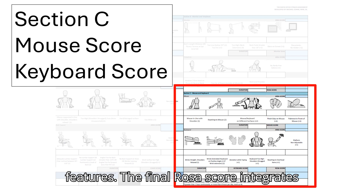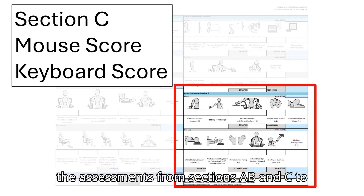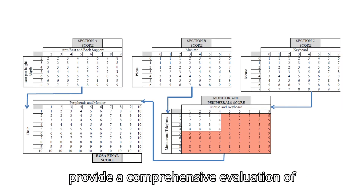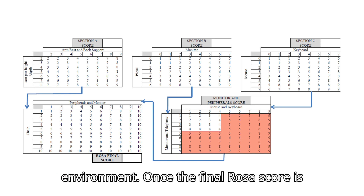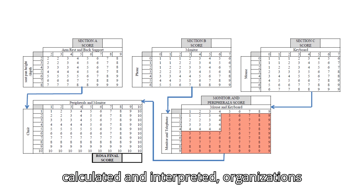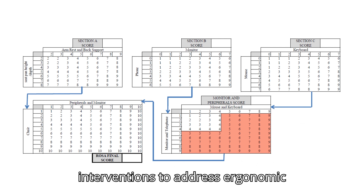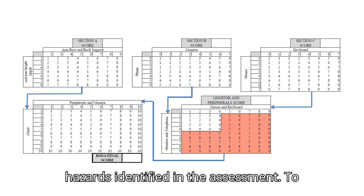The final ROSA score integrates the assessments from sections A, B, and C to provide a comprehensive evaluation of ergonomic conditions in the office environment. Once the final ROSA score is calculated and interpreted, organizations can prioritize and implement appropriate interventions to address ergonomic hazards identified in the assessment.